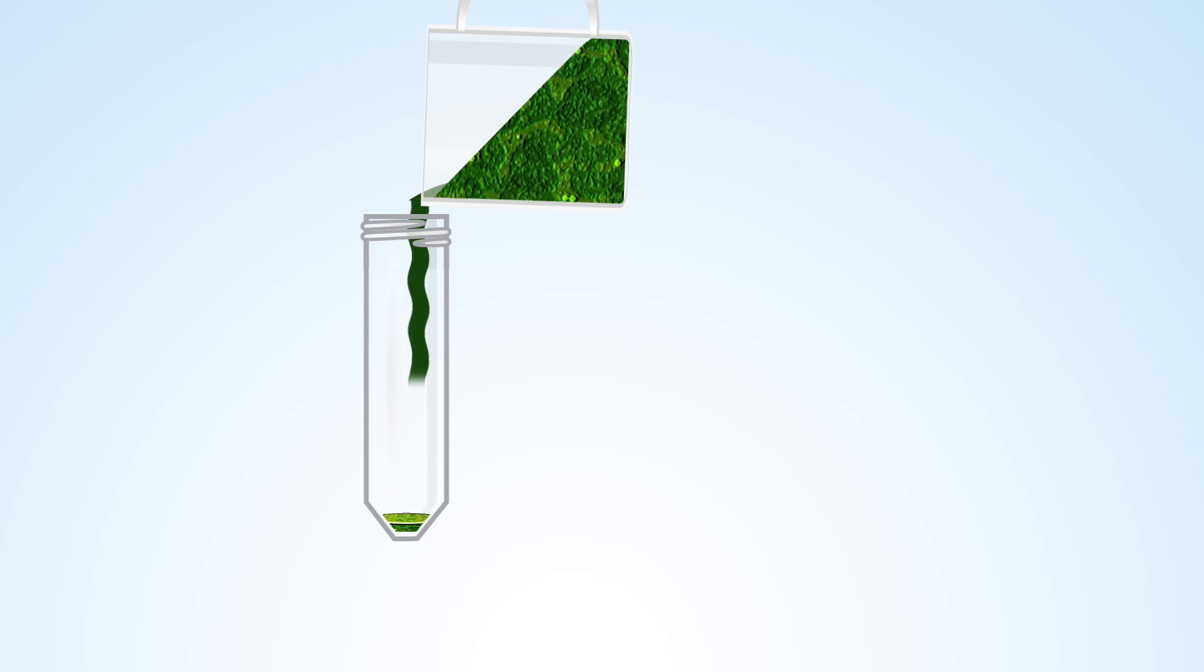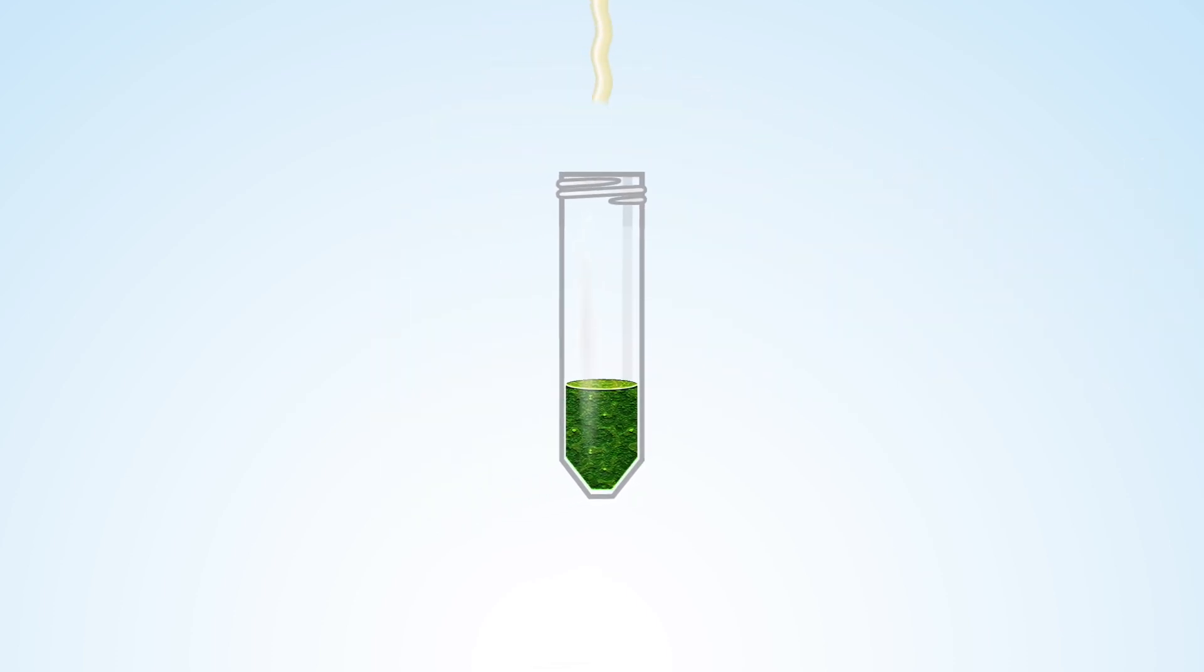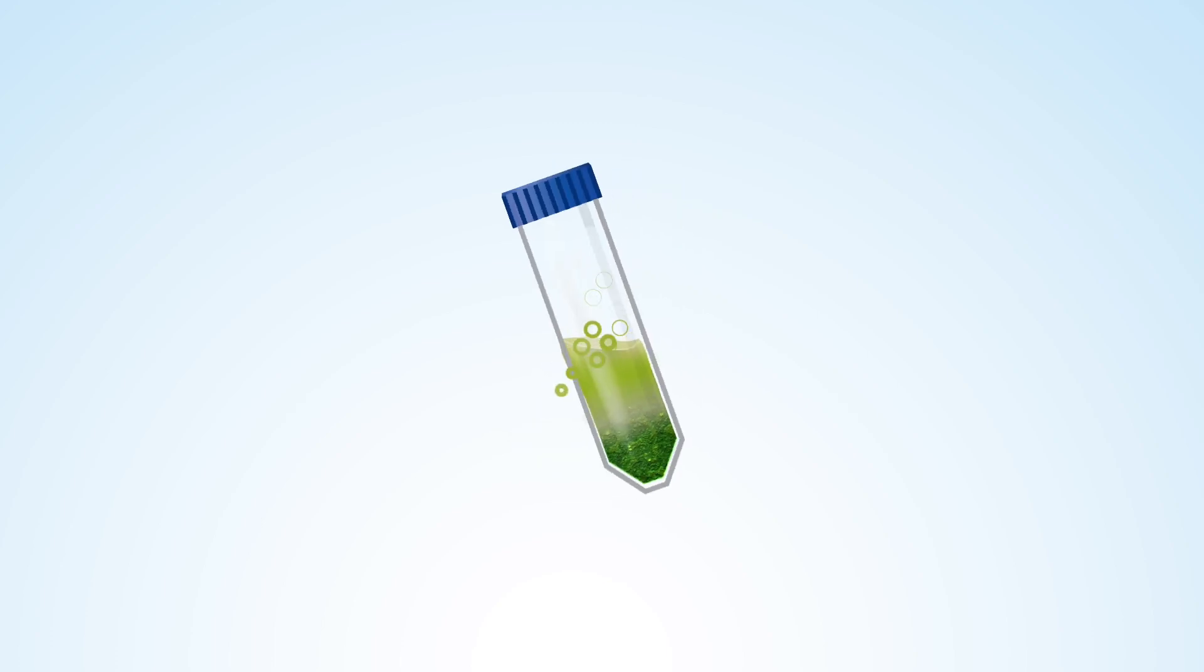Once homogenized, add your sample to a centrifuge tube, then add the solvent, usually acetonitrile, and shake vigorously.